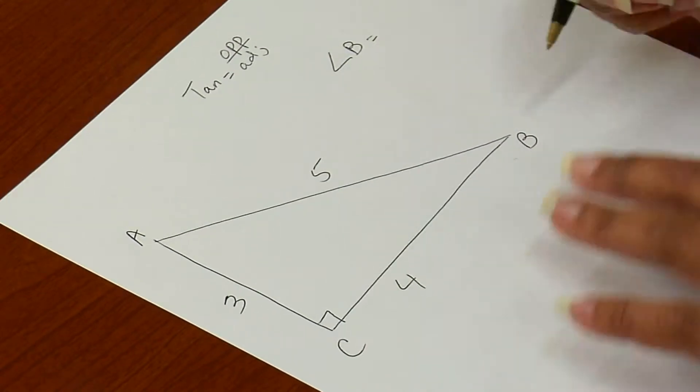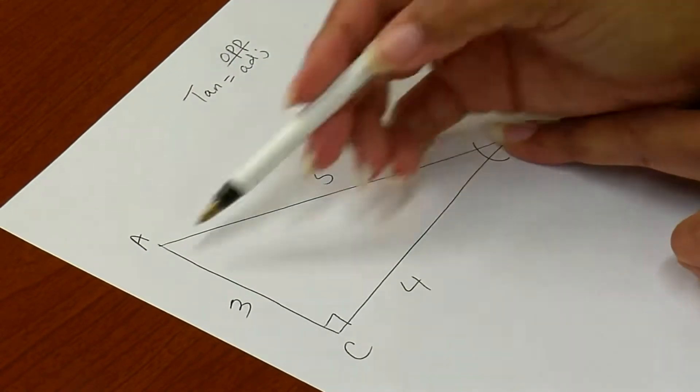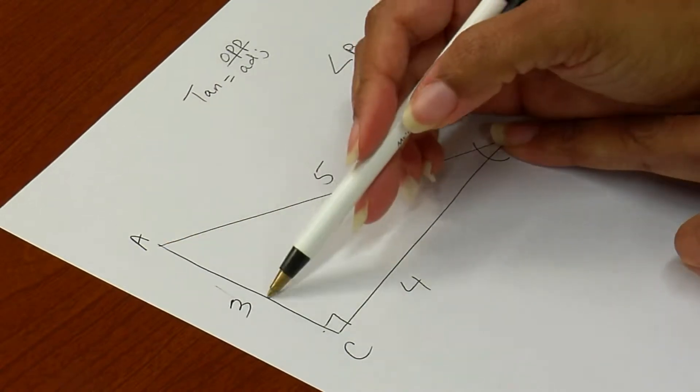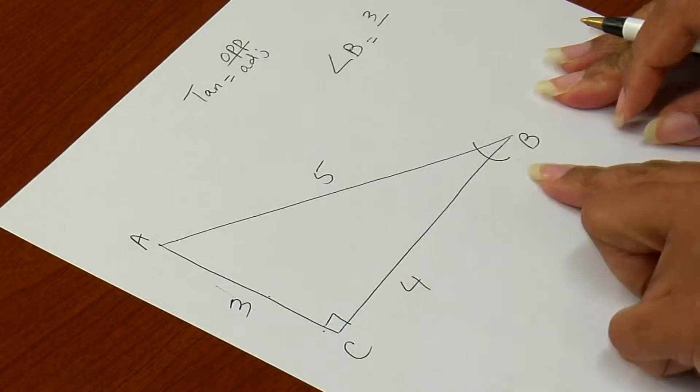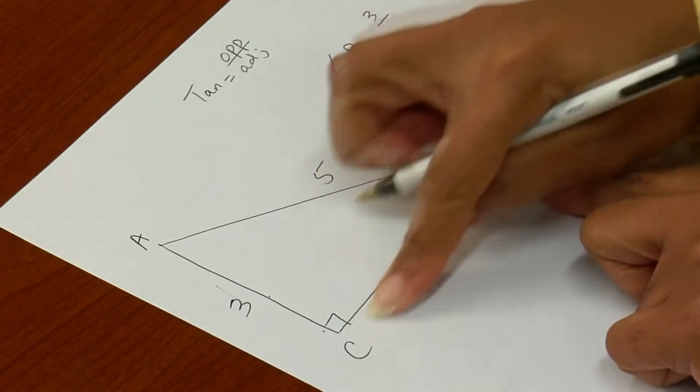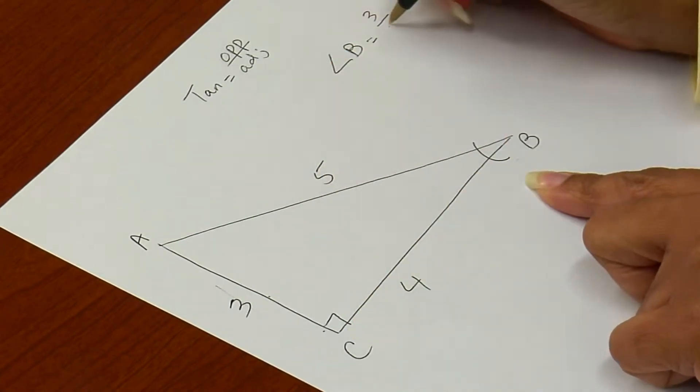So for angle B, I'm starting with angle B here, the opposite leg is 3. So 3 over, and the adjacent leg is 4 because it is part of that angle. So that is the adjacent leg. So 3/4.